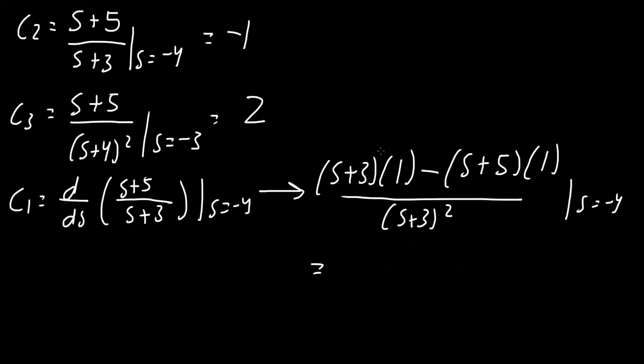And finally, C1. So I plug in negative 4, I get negative 1 times 1 minus parentheses. So negative 4 plus 5 is 1 times 1 divided by—I plug in negative 4 here, I get negative 1 squared, so 1. So this is negative 1 minus 1, so negative 2. So we would get negative 2.